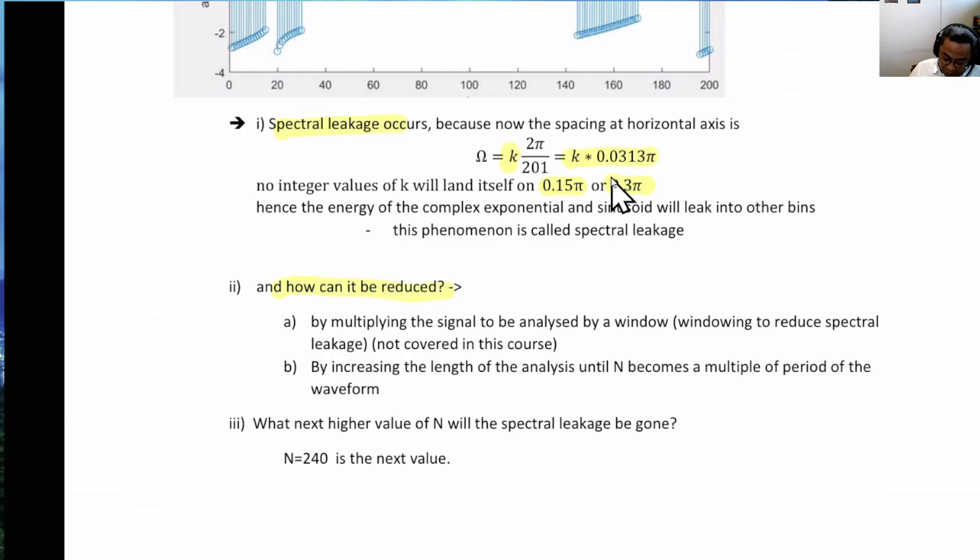How can this be reduced? Well, there are two methods. One of them is by multiplying by a window. So we will not do this in this course, but this is what you can do. Another tool is to increase the length of the analysis such that n becomes a multiple of period of the waveform.